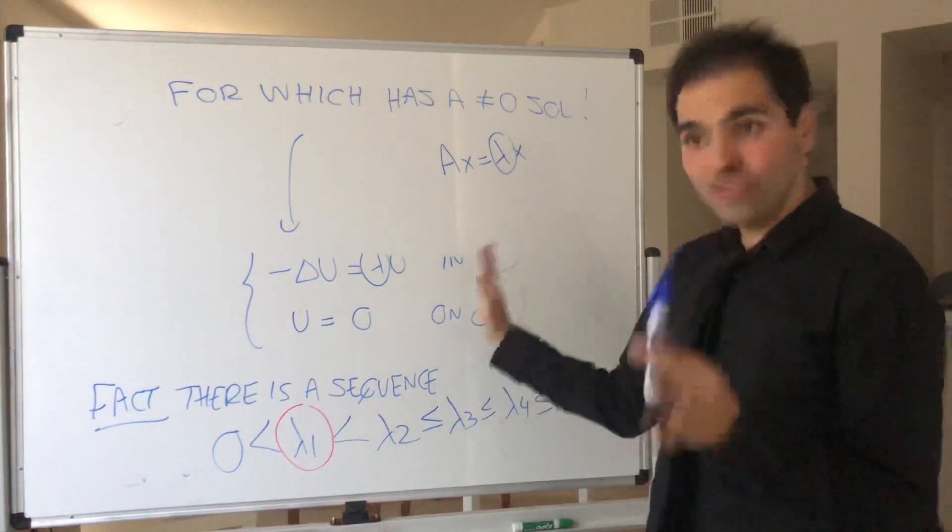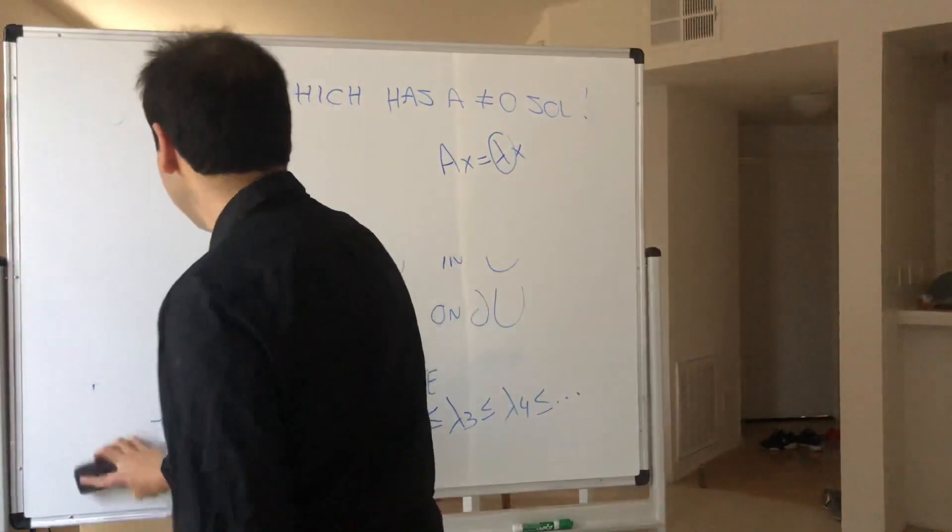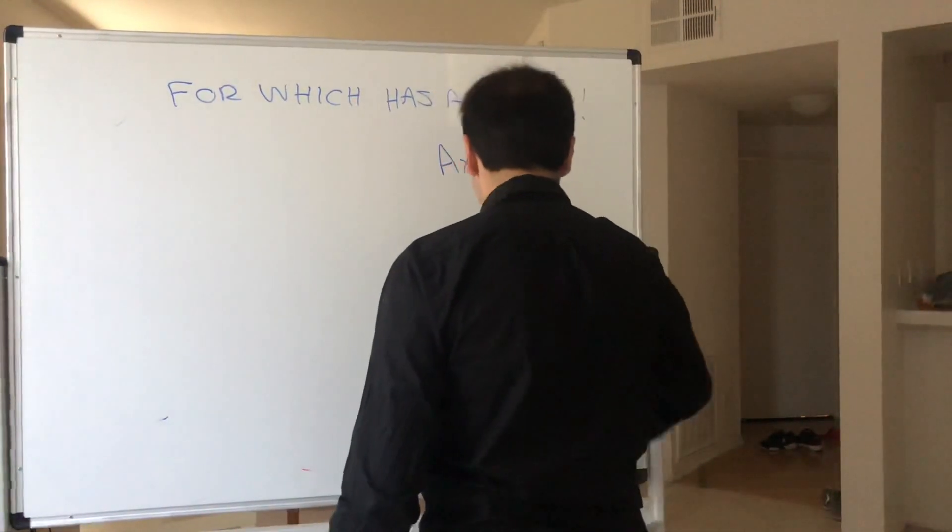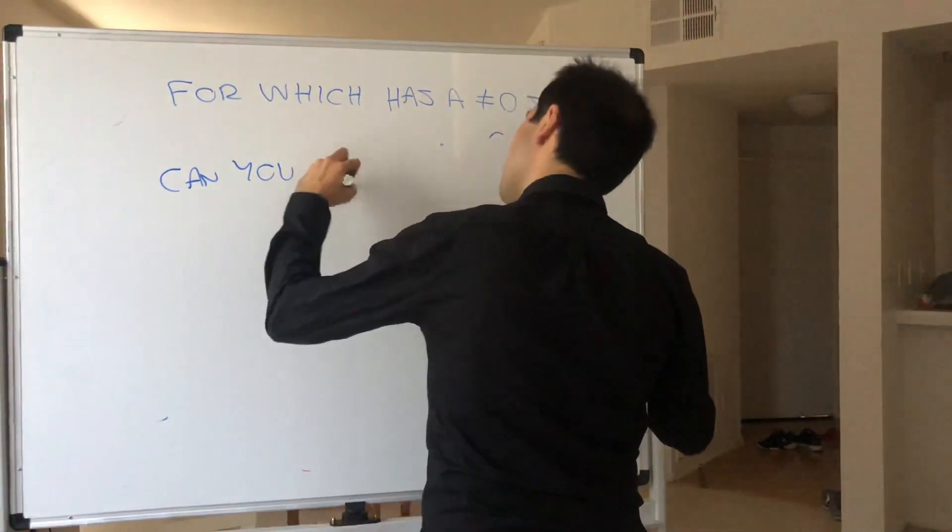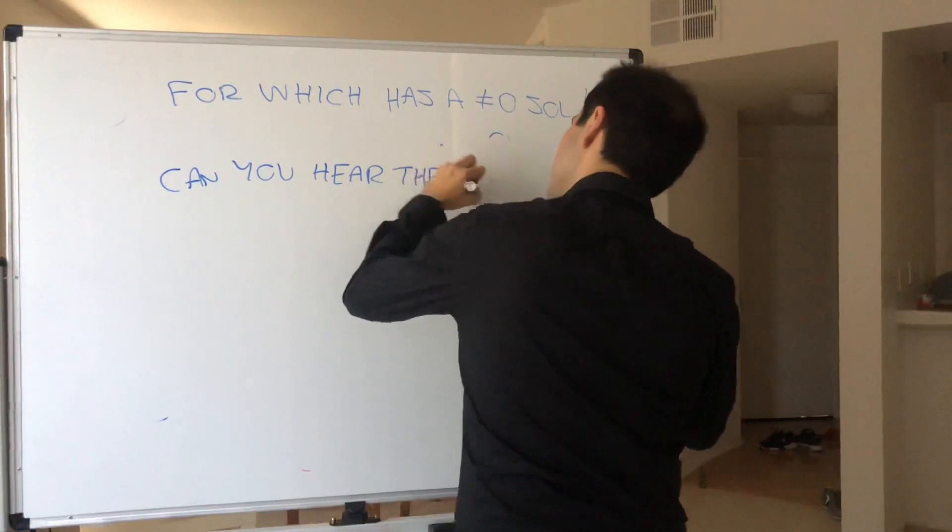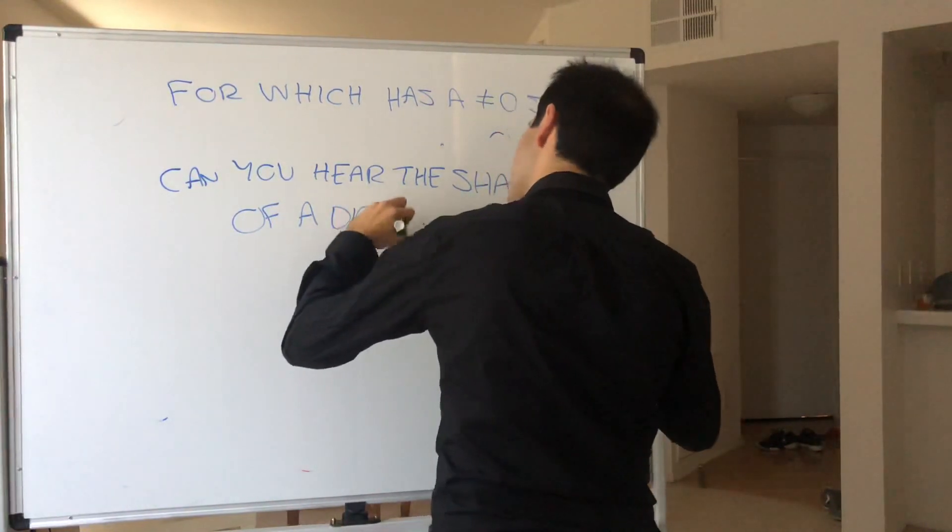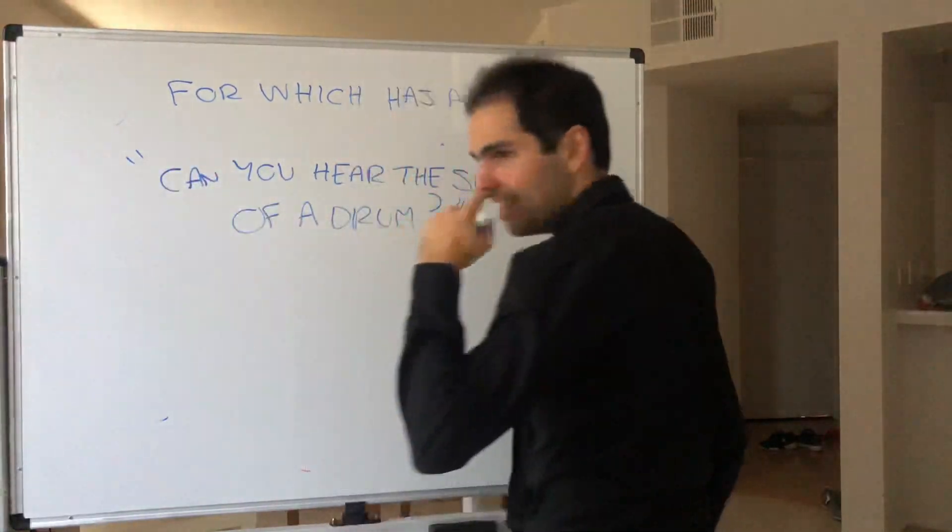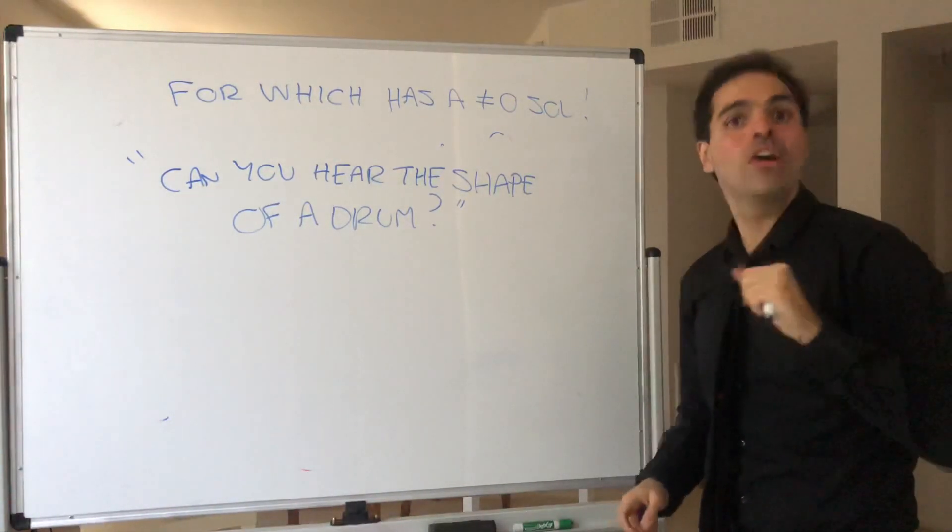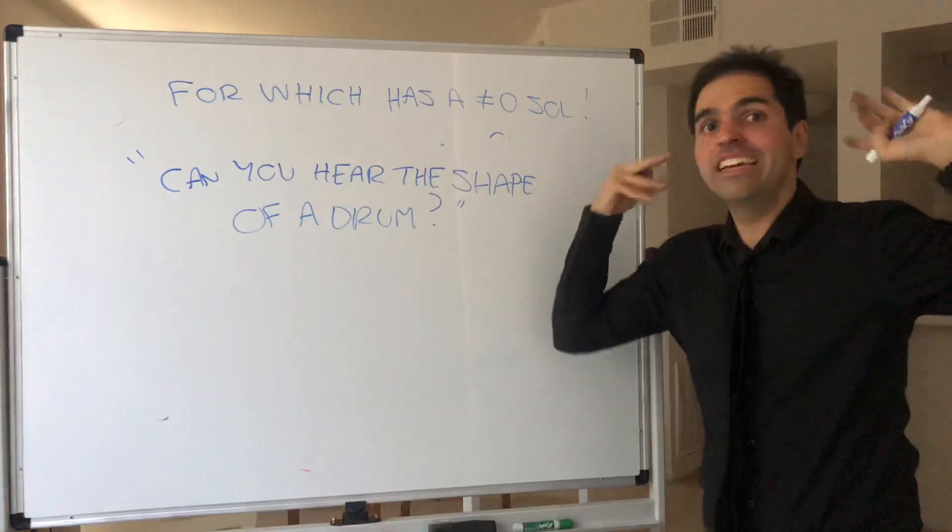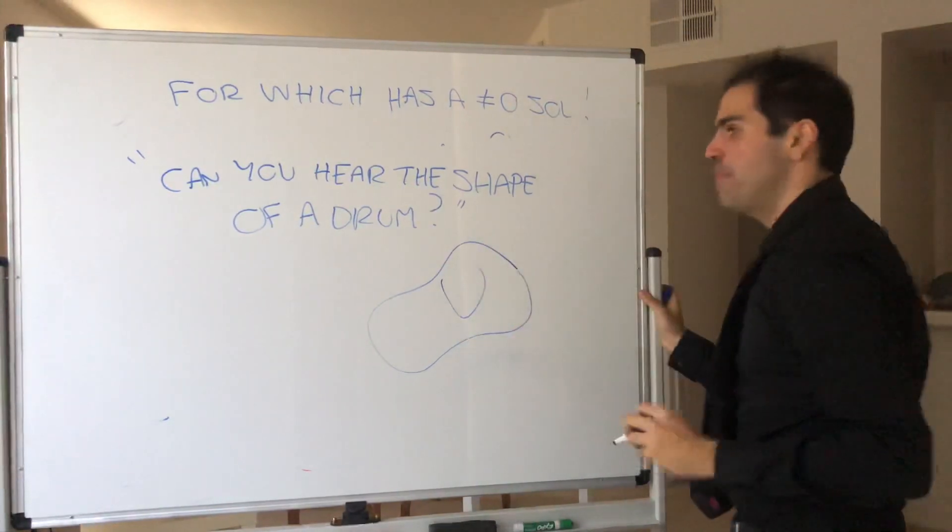And in fact, there's a super interesting question that was posed by Mark Katz. Namely, can you hear the shape of a drum? In other words, if I only tell you what the eigenvalues are. So if I only tell you lambda 1, lambda 2, etc - which again, are the sounds that you hear - can you figure out what the big domain capital U is?